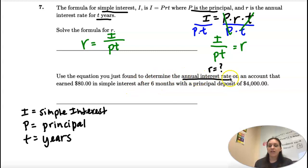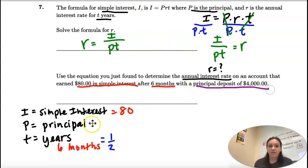Use the equation to find R on an account that earned $80 in simple interest. So I is 80. After six months, uh-oh. How is six months related to a year? It's half. So our T is actually one-half. And then our principal is 4,000.